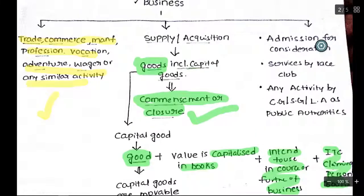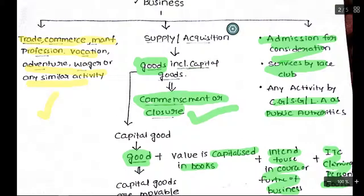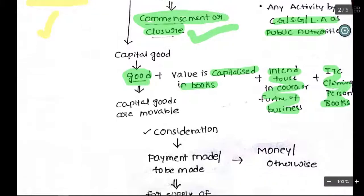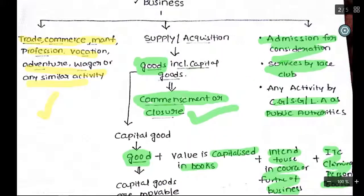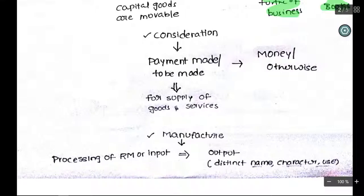Admission for consideration — if we need admission into any concert, GST is to be levied with respect of it. If a club is providing services, this is also liable to GST. Similarly, activities by central government, state government, or local authority are also subject to GST, though exemptions are provided for certain activities which will be discussed under Schedule 3. Consideration means payment made with respect to supply of goods and services or both, whether in the form of money or any other form.